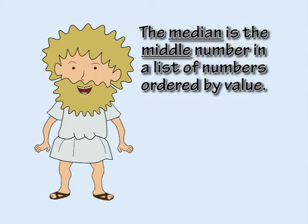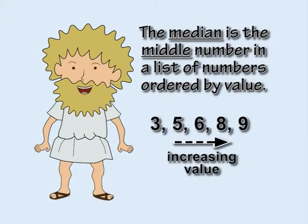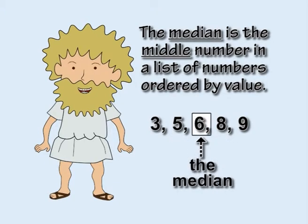The median is the middle number in a list of numbers that have been ordered by value. To work out the median in a group of numbers, first place them in order of value, from the smallest to the biggest, then count along to find the middle number.